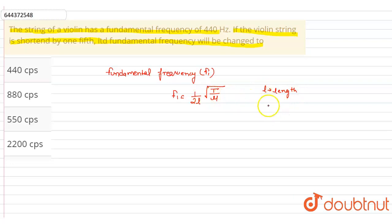And T is tension in string, and mu is mass per unit length.